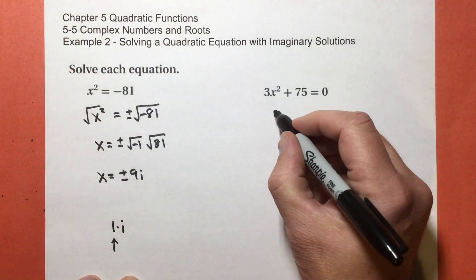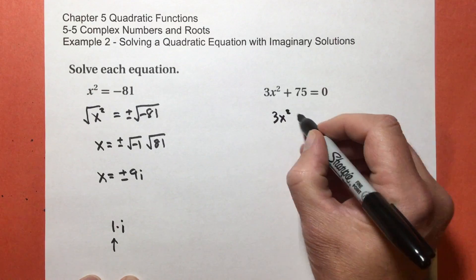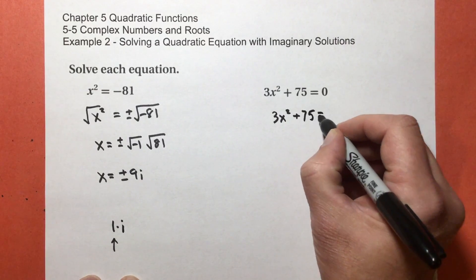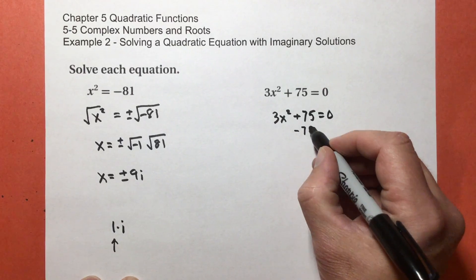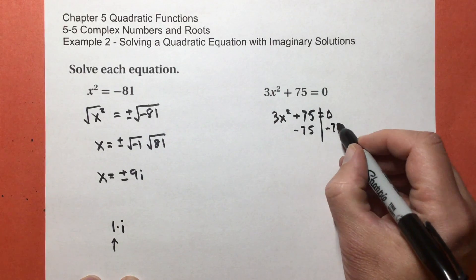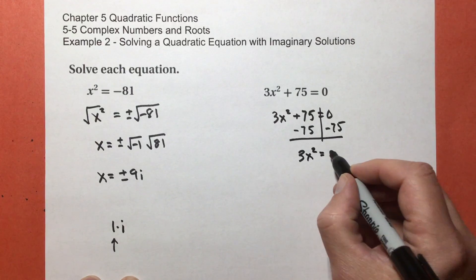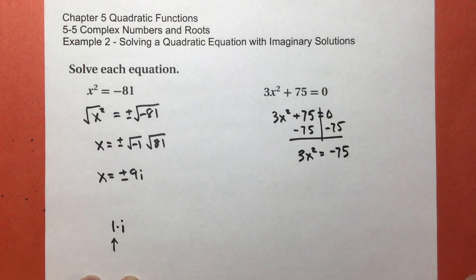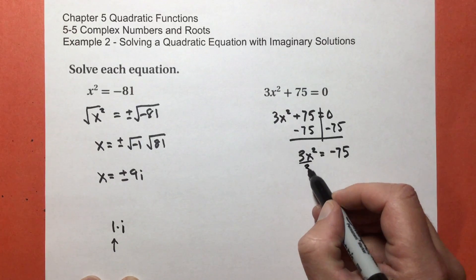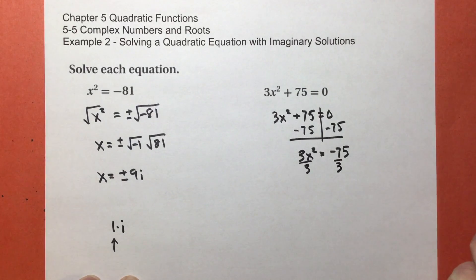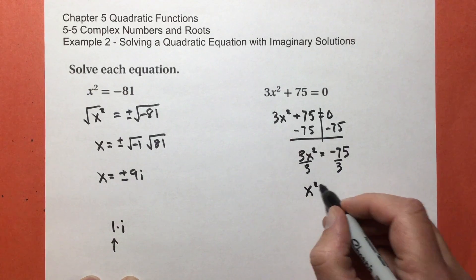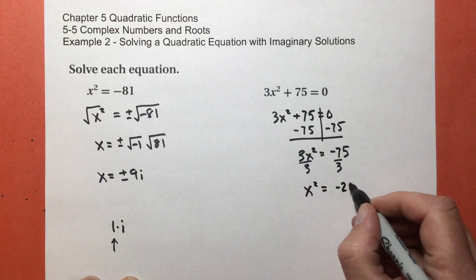Let's work with this one. I get 3x² + 75 = 0. I'm gonna add -75 to both sides of my equation. I get 3x² = -75. The opposite of multiplying by 3 is divide by 3 or multiply by 1/3. And I get x² = -25.